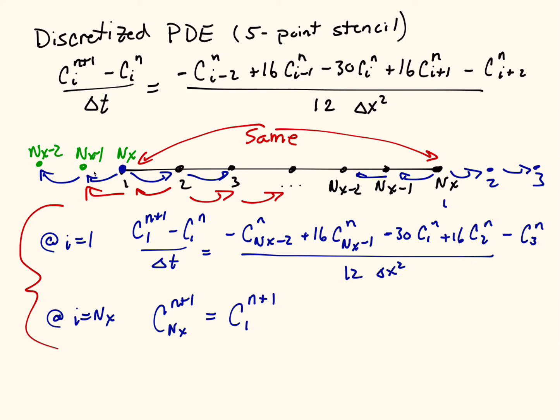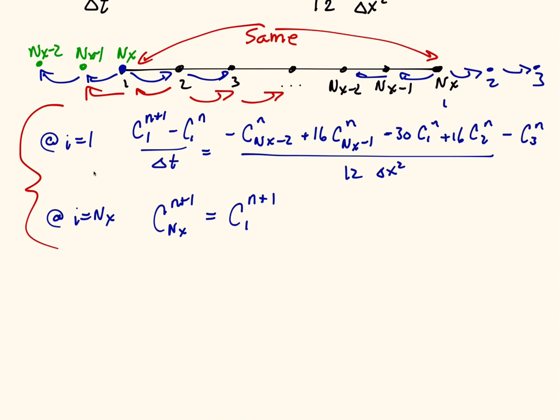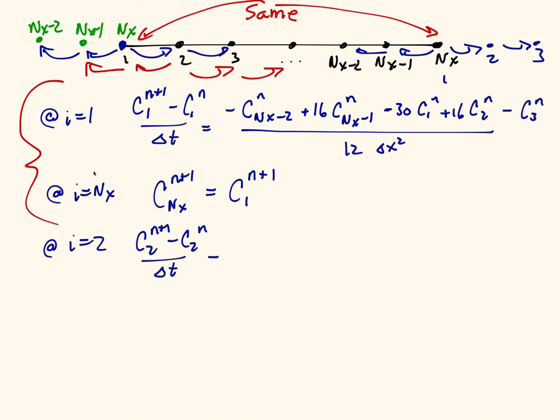So let me just write that down and then we'll be done. If I'm at i equals 2, I can say (c2^(n+1) - c2^n)/Δt equals minus c... now this is the point 2 to my left, which is cnx-1, plus 16 times the point just to my left, which is c1 at the nth time.